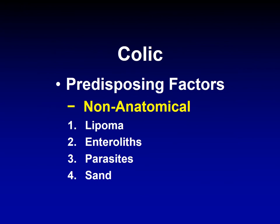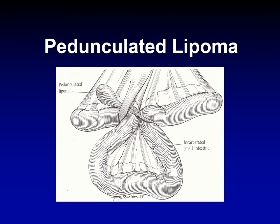Non-anatomical factors include lipomas, enteroliths, parasites, and sand. The first is pedunculated lipoma — usually in older, overweight horses that develop fatty growths in their intestines. Sometimes this pedunculated lipoma wraps around the intestine and suffocates it, preventing blood supply to a piece of intestine, killing it and causing colic.